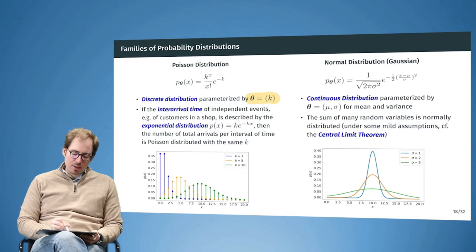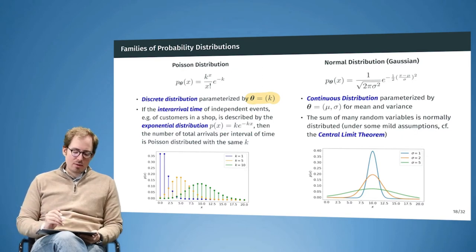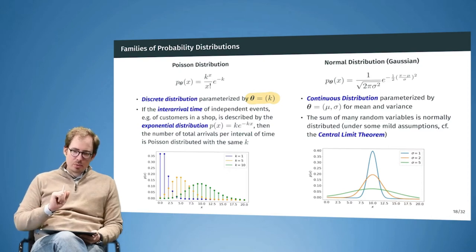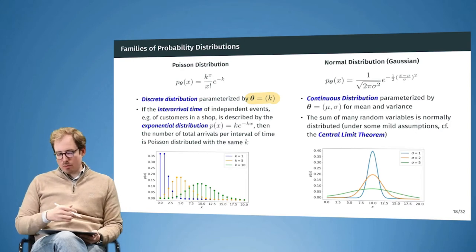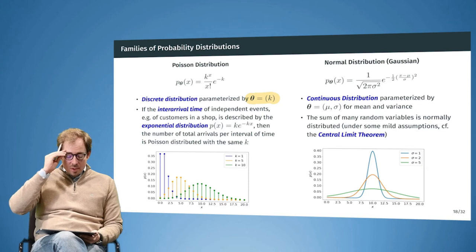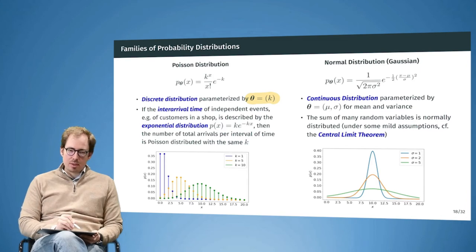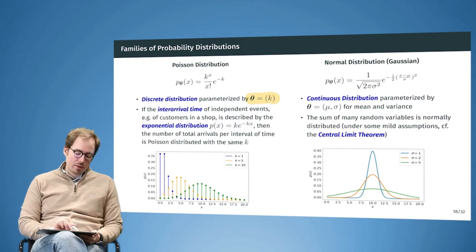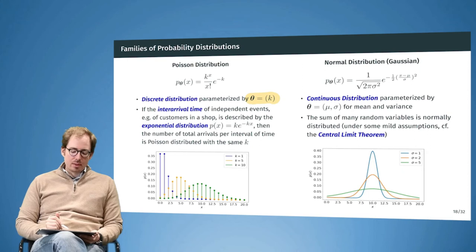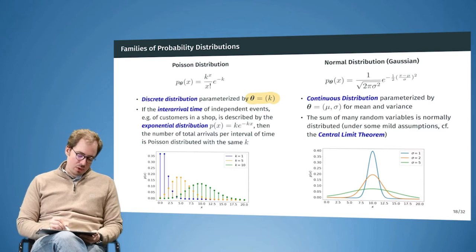For independent events, the inter-arrival time — the time between two customers arriving — is exponentially distributed. This follows from their independence. Now if we are not interested in the time between customers but in how many customers arrive, for example in one hour or 30 minutes, we get the Poisson distribution. It is discrete, so there can only be whole numbers of customers arriving. The parameter for the Poisson distribution is k, and here you can see the distribution for different values of k.